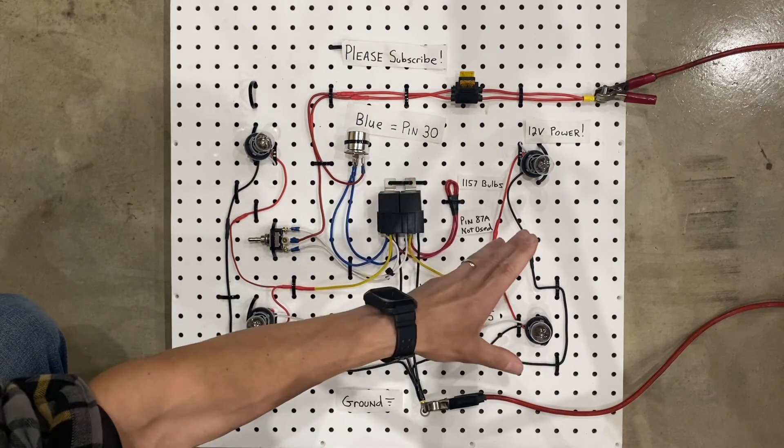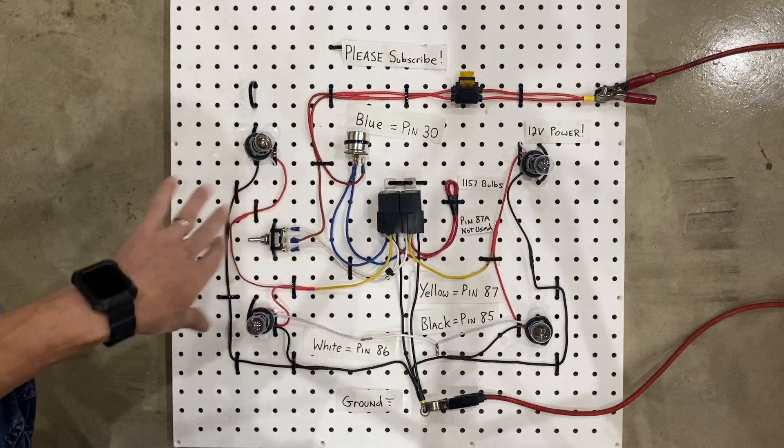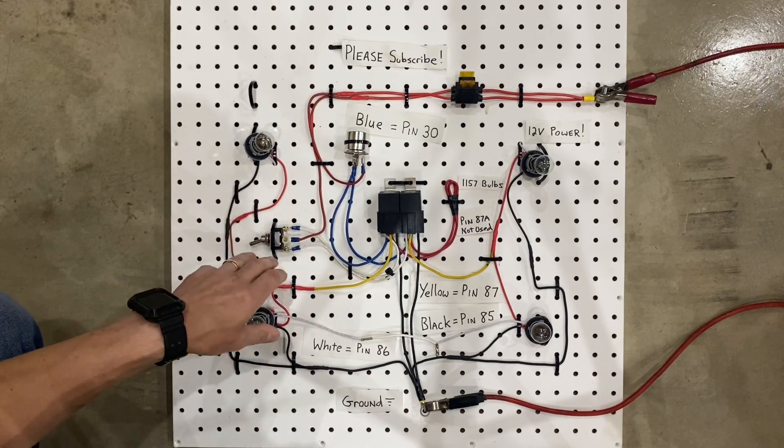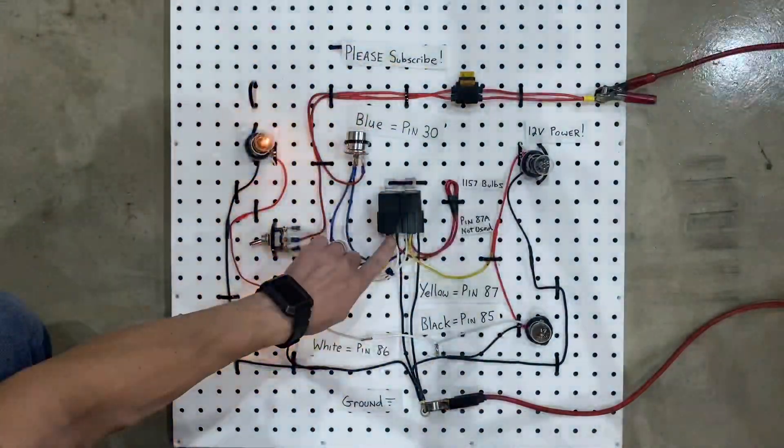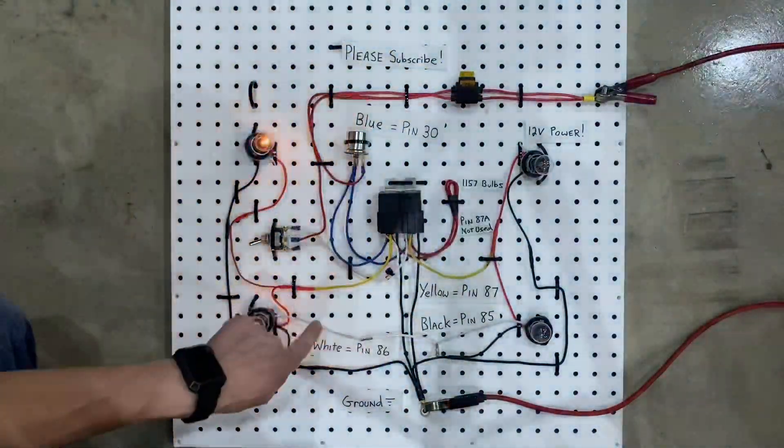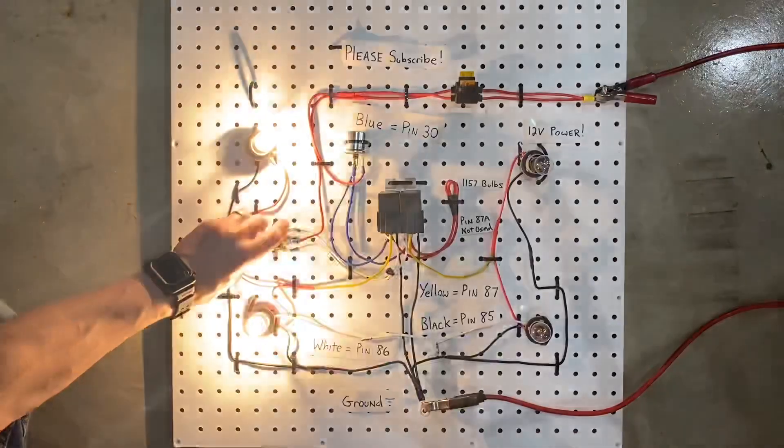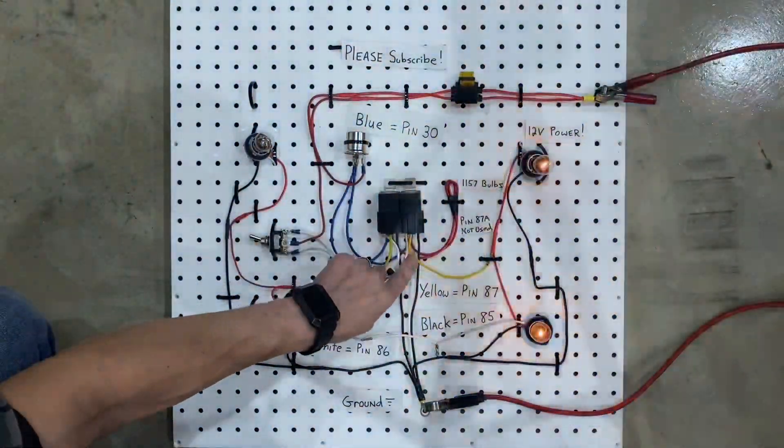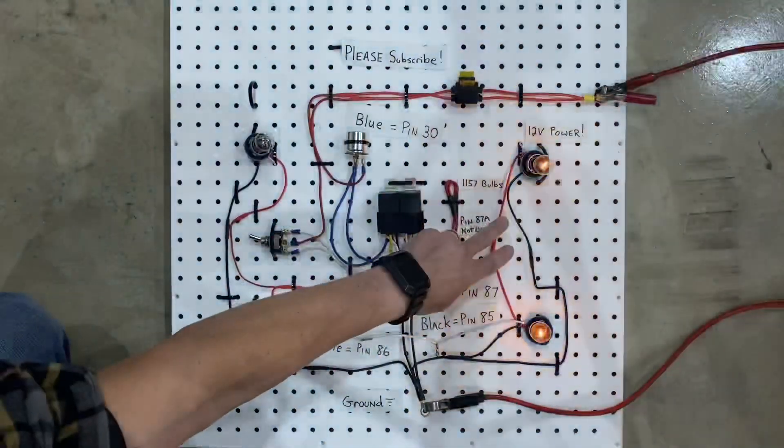Coming out of the relays on the yellow wires, that is pin 87. One relay does the right directionals, one relay does the left directionals. So, when you turn on the left directionals, you have power coming out of the yellow wire and going to each bulb. If you turn on the right directionals, you have power coming out the yellow wire on the right relay going to the right bulbs.